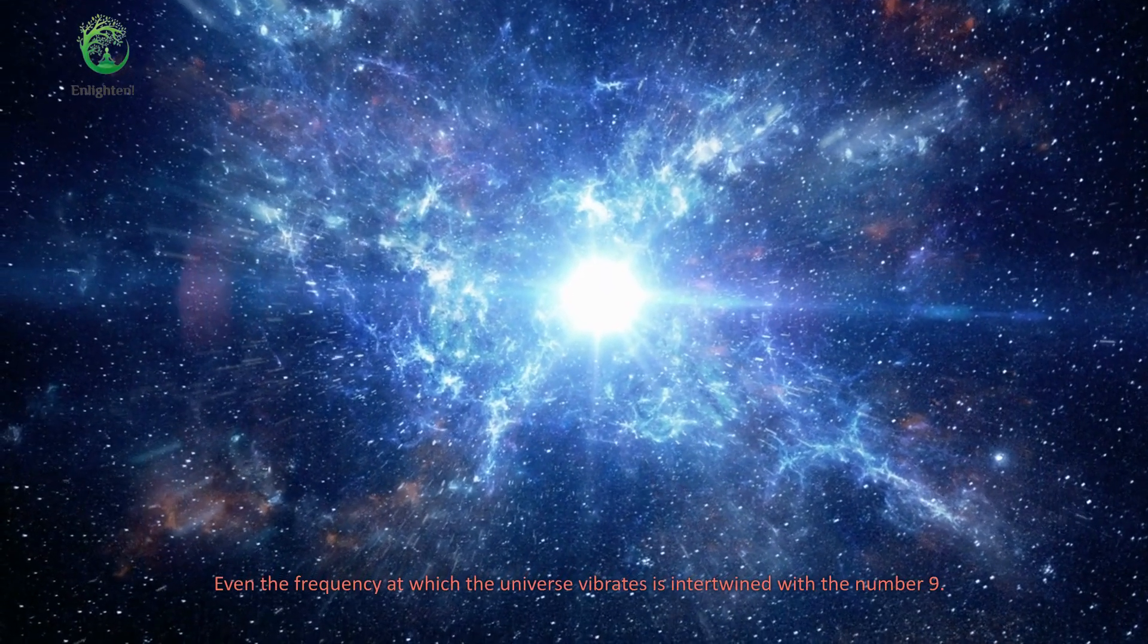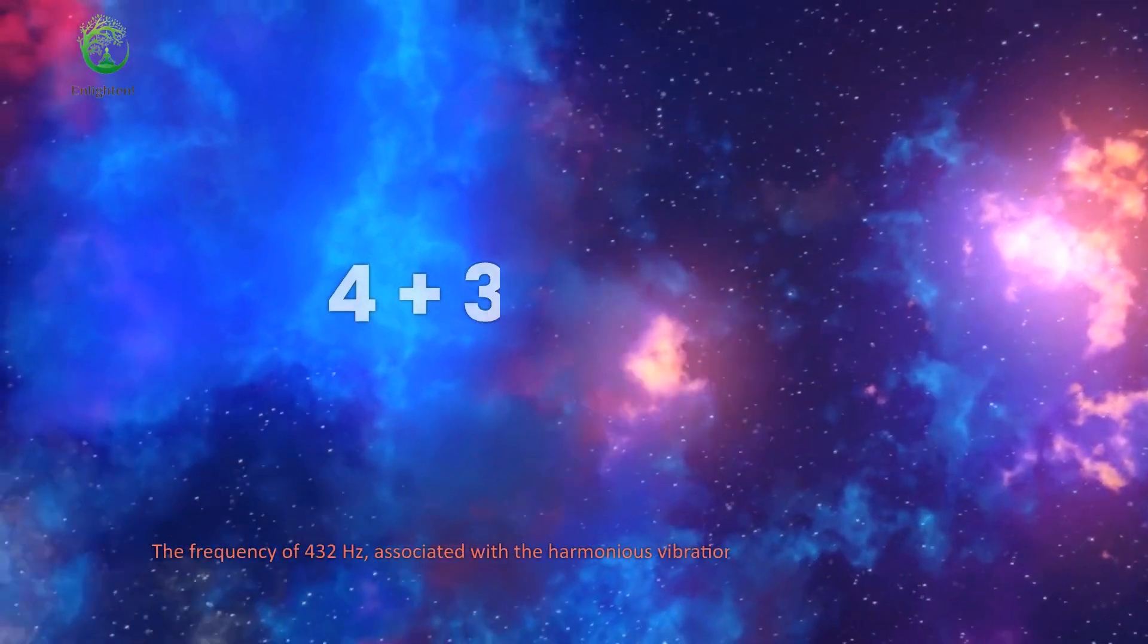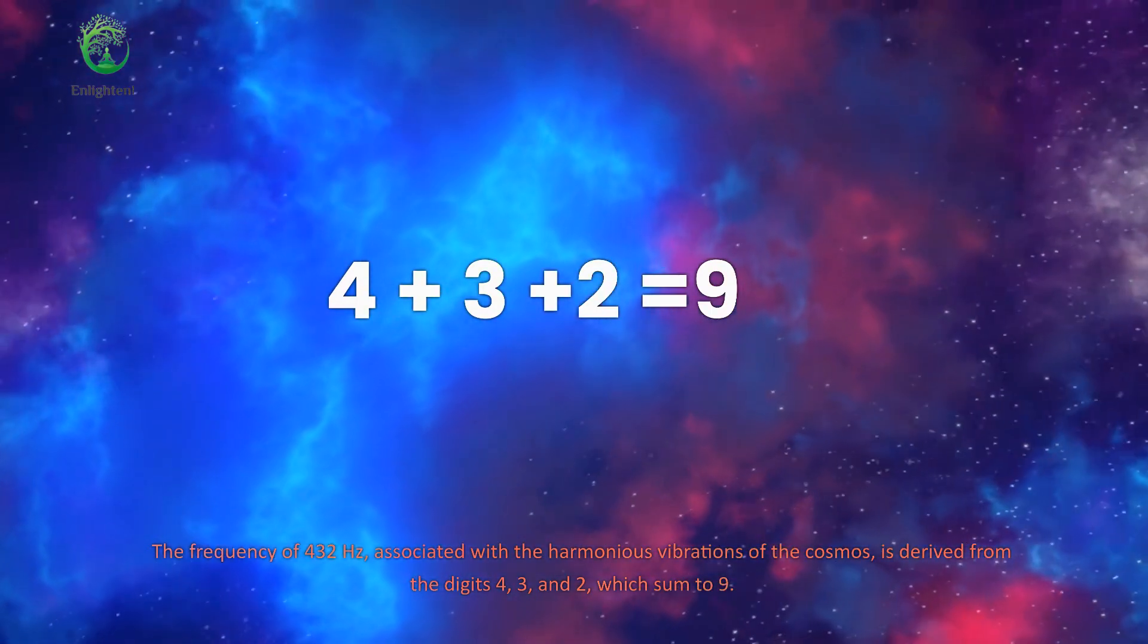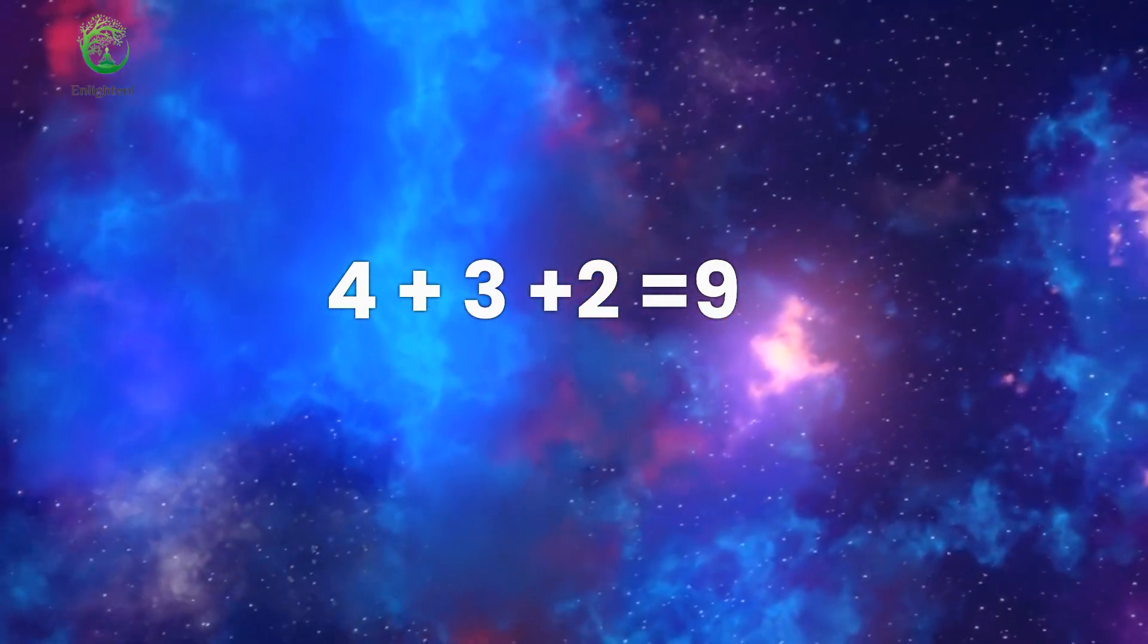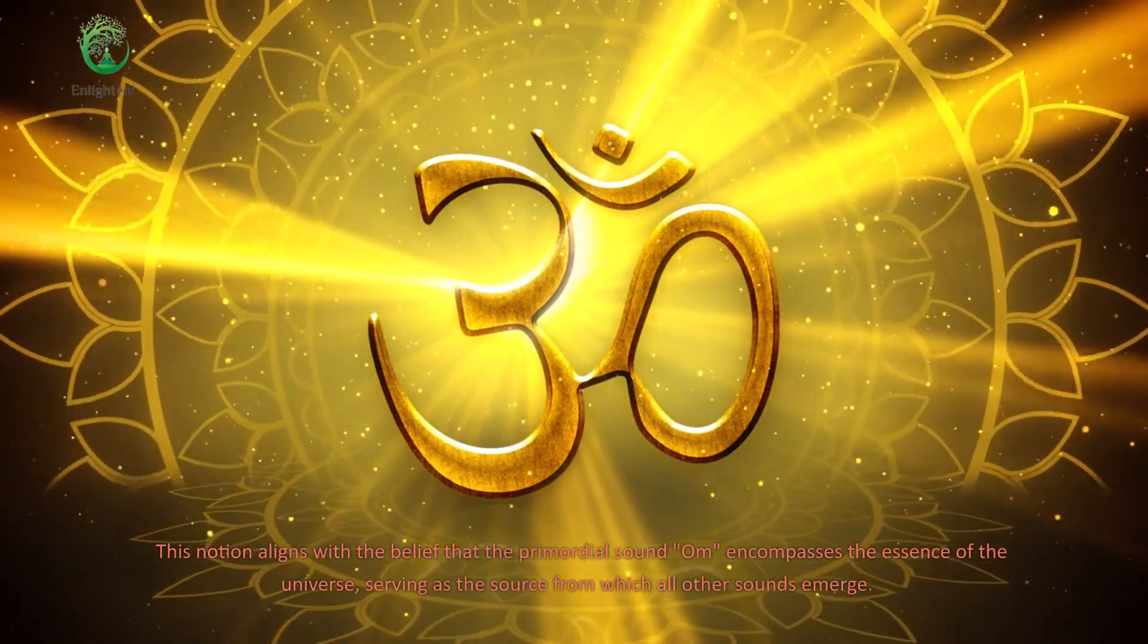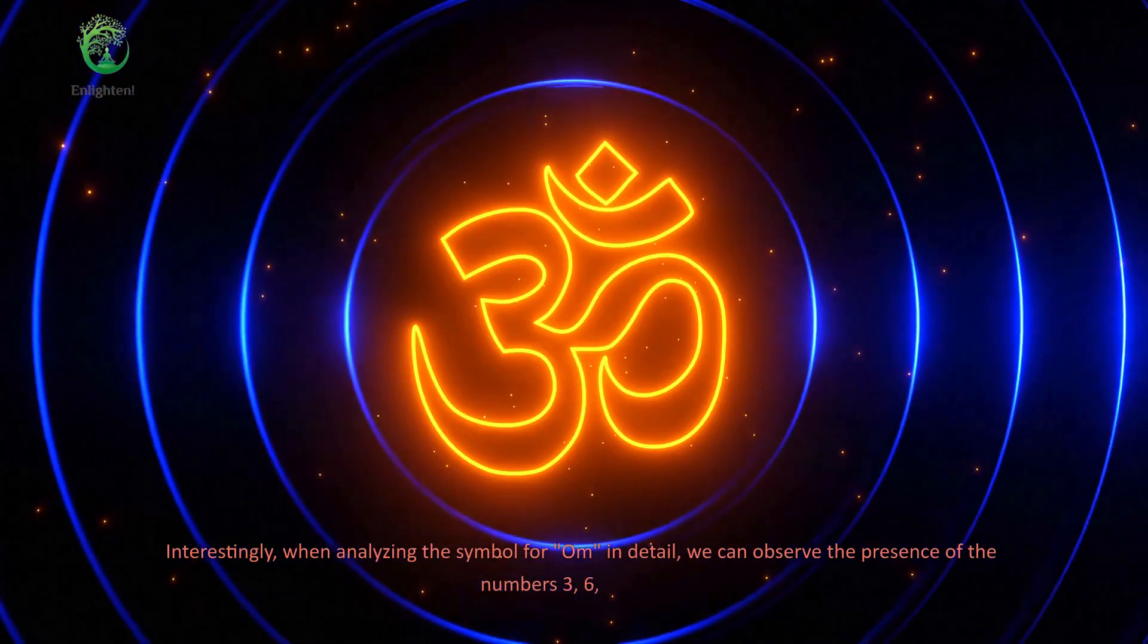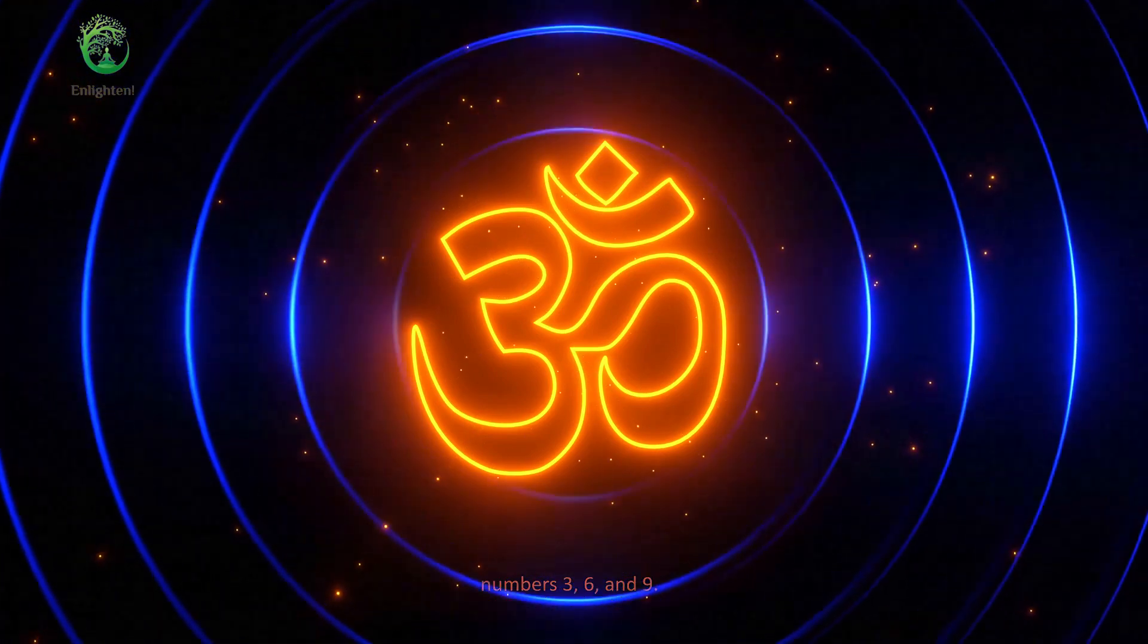Even the frequency at which the universe vibrates is intertwined with the number 9. The frequency of 432 Hz, associated with the harmonious vibrations of the cosmos, is derived from the digits 4, 3, and 2, which sum to 9. This notion aligns with the belief that the primordial sound om encompasses the essence of the universe, serving as the source from which all other sounds emerge. Interestingly, when analyzing the symbol form in detail, we can observe the presence of the numbers 3, 6, and 9.